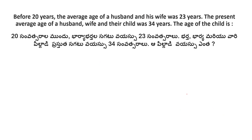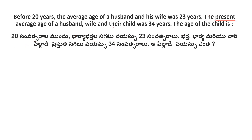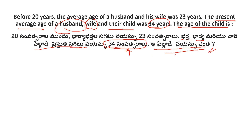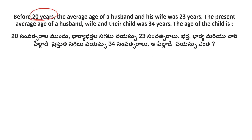Next question: 20 years ago, the average age of a husband and his wife was 23 years. The present average age of the husband, wife, and their child is 34 years. Find the present age of the child.